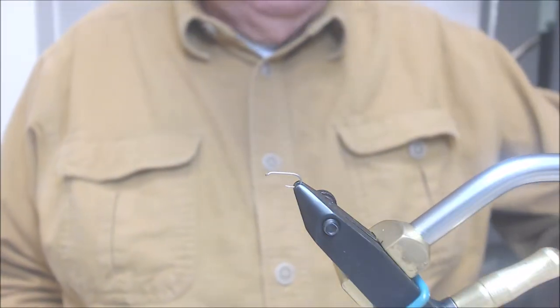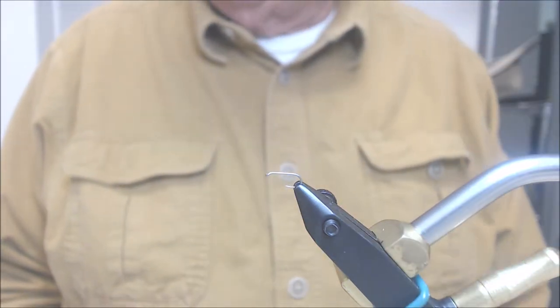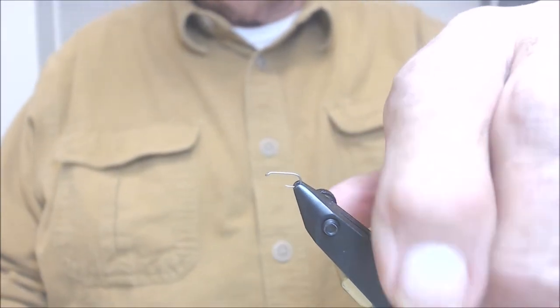Okay, we're going to tie a bastard midge. In the vise I have a D-102 barbless hook from the Allen Hook Company. It's a size 18.